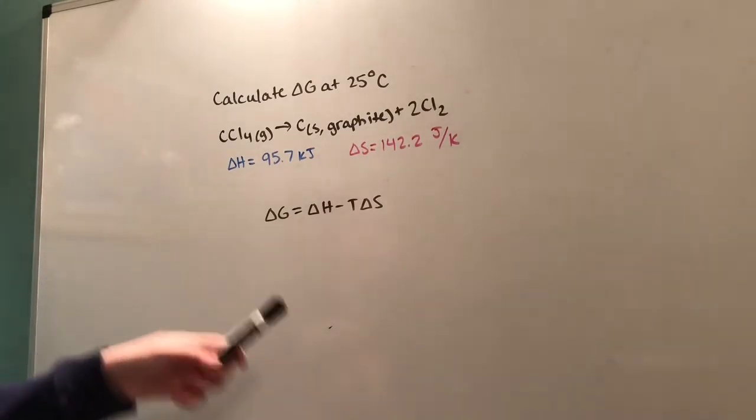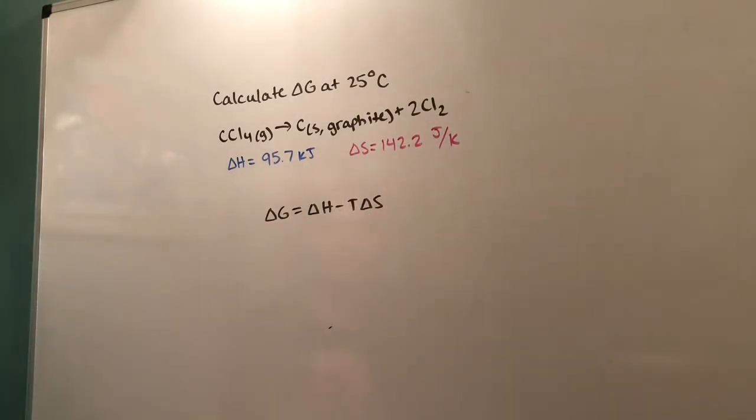We're given these values: ΔH and ΔS, and the temperature is 25°C. We're going to use all this information and plug it into this formula to find ΔG, but we need to make sure everything is in proper units so they cancel out and add properly.